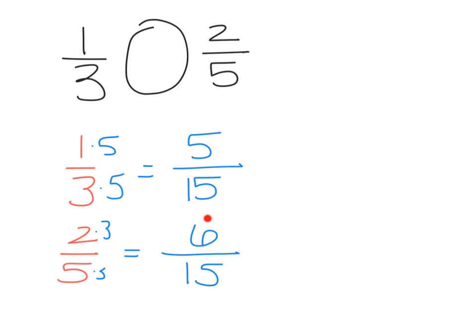Looking at this, I can tell that six-fifteenths is greater than five-fifteenths, and that's this fraction down here. So I'm going to come back up and put that one-third is less than two-fifths. How did you do?